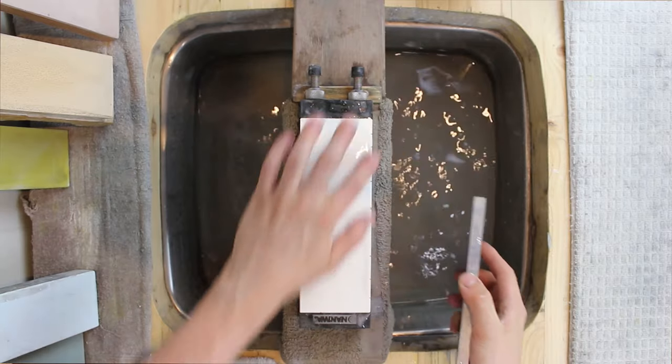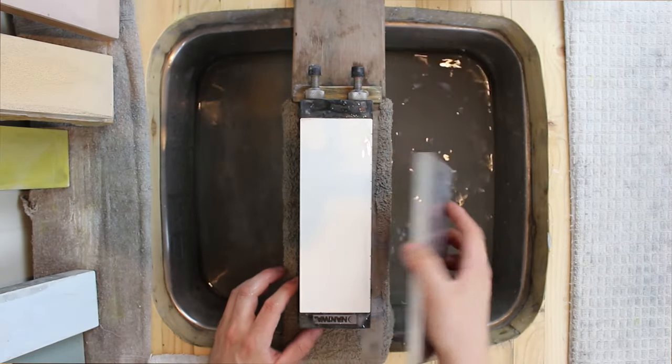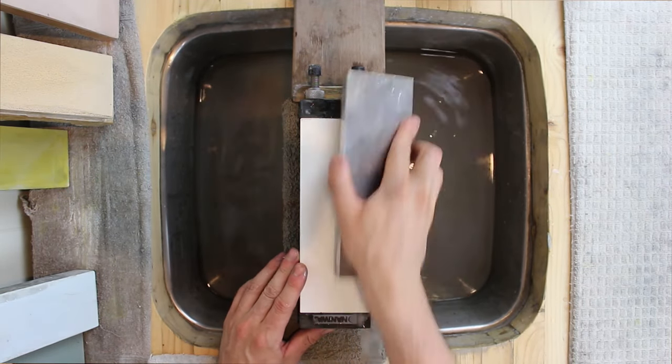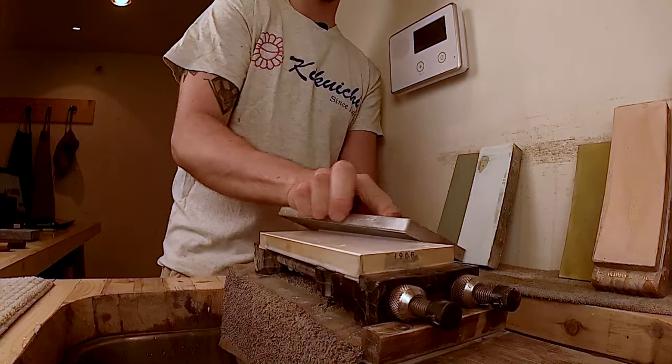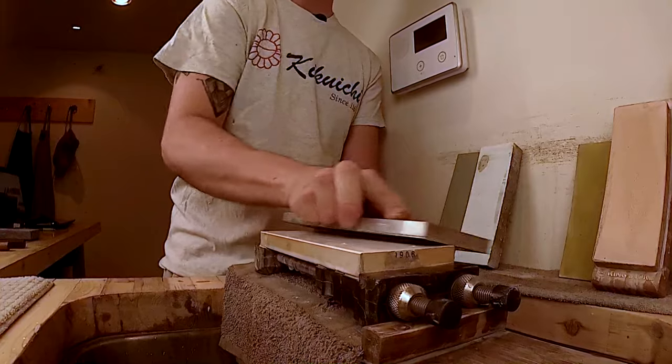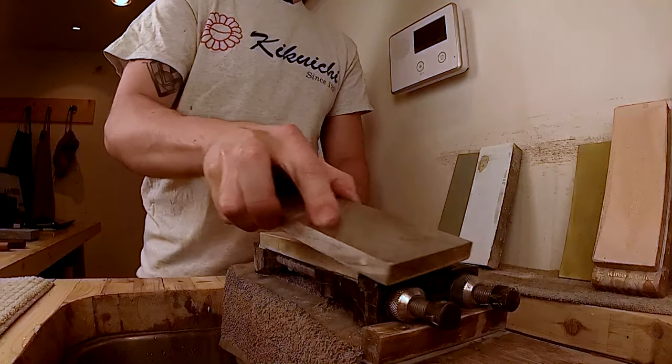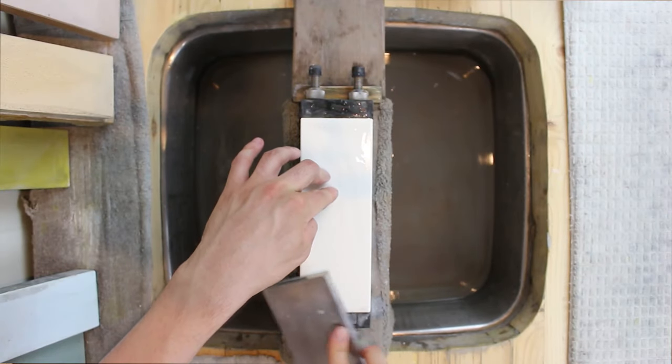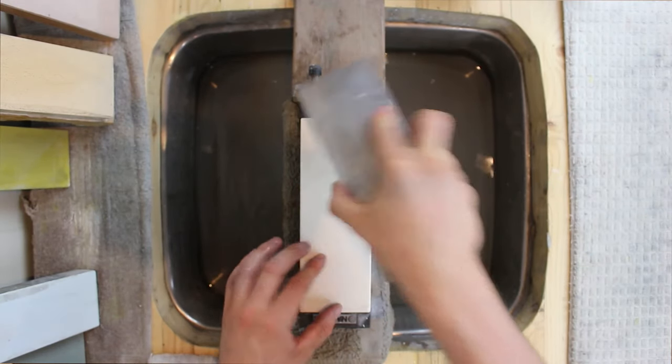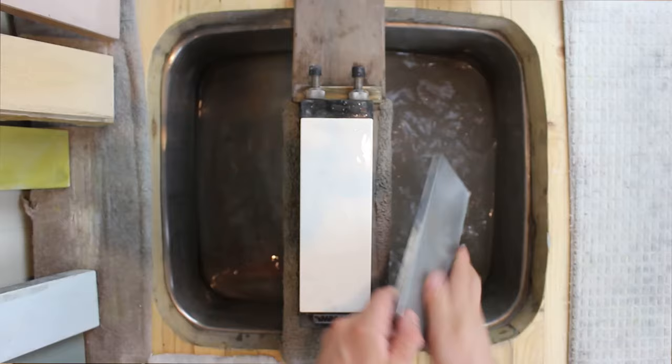We also need to make sure that we are rounding off the edges of our stone when we flatten. The edges of our stone can get very sharp after we flatten out our stone and that can cause damage to our knife when we're sharpening. So simply rounding all the edges and corners of our stone off.